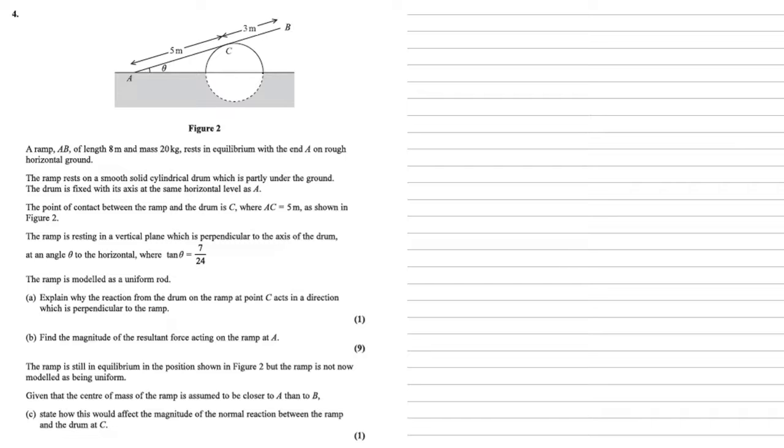Part A: Explain why the reaction from the drum on the ramp at point C acts in a direction which is perpendicular to the ramp. The important thing here is that our ramp is resting on a smooth cylindrical drum, so there are no friction forces. The drum is smooth, therefore the reaction is perpendicular to the ramp.